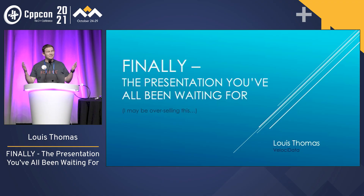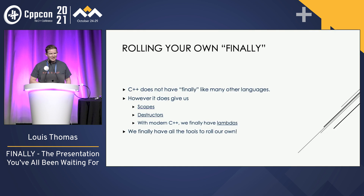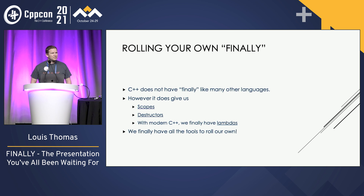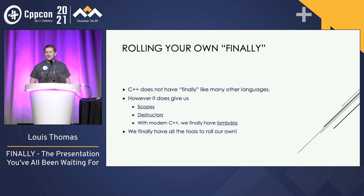My name is Louis Thomas, and this is finally the presentation you've all been waiting for. C++ does not have its own finally, unlike a lot of languages, but it does give us scopes, destructors, and with modern C++ we finally have lambdas — so we have everything we need to roll our own, so let's do so.